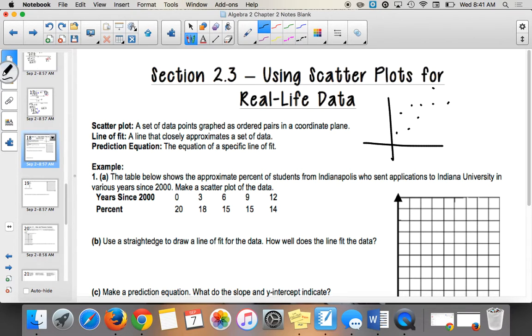A line of fit is a line that closely approximates the set of data, and the prediction equation is the equation for that line of fit. Your calculator can find the best line of fit. It runs it through every single pair of points and finds the line that the points are closest to. But we're not going to do that. We're going to do ours by hand.